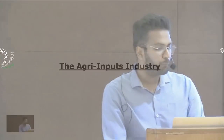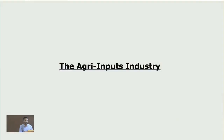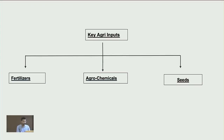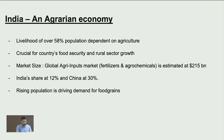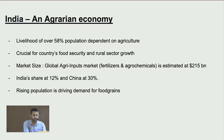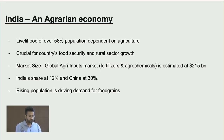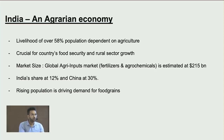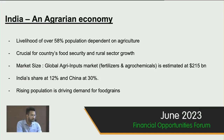Today we are going to look at the not-so-fancy agriculture sector. The topic for today is the agri input industry. We'll divide this topic into three sub-segments: fertilizers, agrochemicals and seeds. As MS Swaminathan, the father of the Green Revolution in India, said, if agriculture goes wrong nothing else will go right. Almost 58% of India's population depends on agriculture for their livelihood.